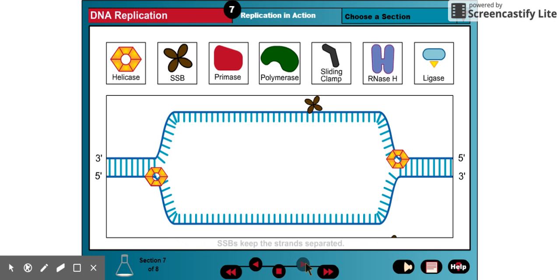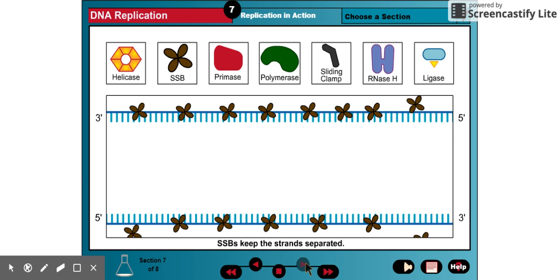Single-strand binding proteins, or SSBs, coat the single DNA strands to prevent them from snapping back together. SSBs are easily displaced by DNA polymerase.